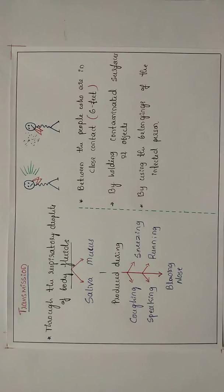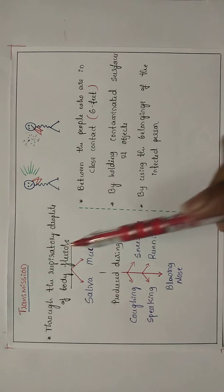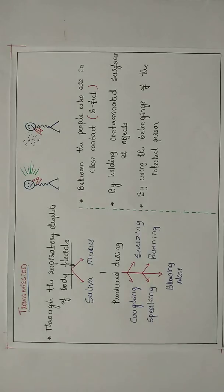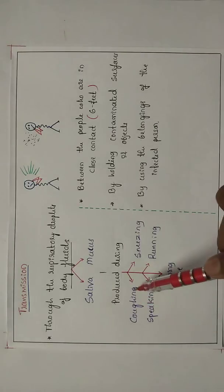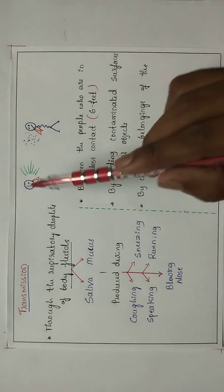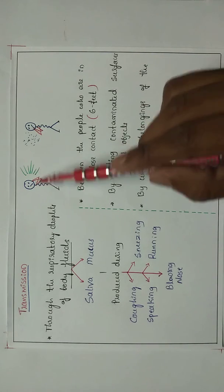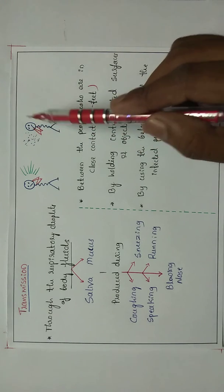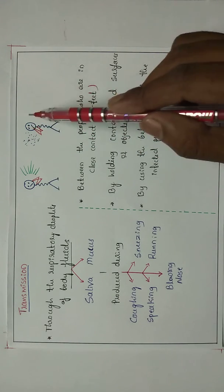Till now we have discussed about the symptoms of corona infection. Now we will discuss how the corona transmits from one person to another person. The major way of transmitting is through the respiratory droplets of body fluids like saliva and mucus, which are produced while coughing, sneezing, speaking, running, or blowing our nose. Any kind of fluid that comes out of the infected person's body can infect the nearby person.